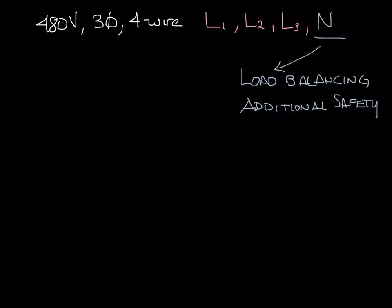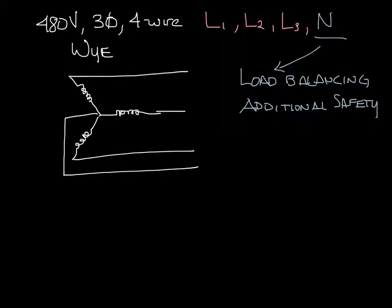There are two basic 3-phase wiring configurations, Y and Delta. And they look like this. So the Y is kind of shaped like a Y. And then you have a neutral connected to the common point of all three loads. So here we have L1, L2, L3, and neutral.